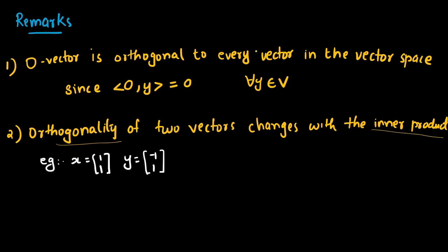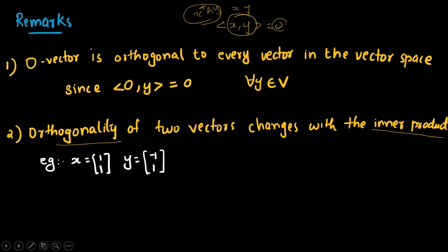We are saying the inner product should equal zero — that is the only condition. This inner product can be anything: it can be the dot product, or it can be x transpose A y, or any other function. As the inner product function changes, it may not be equal to zero, so we cannot say that the vectors are orthogonal. We have to specify orthogonality with respect to the inner product that we use.